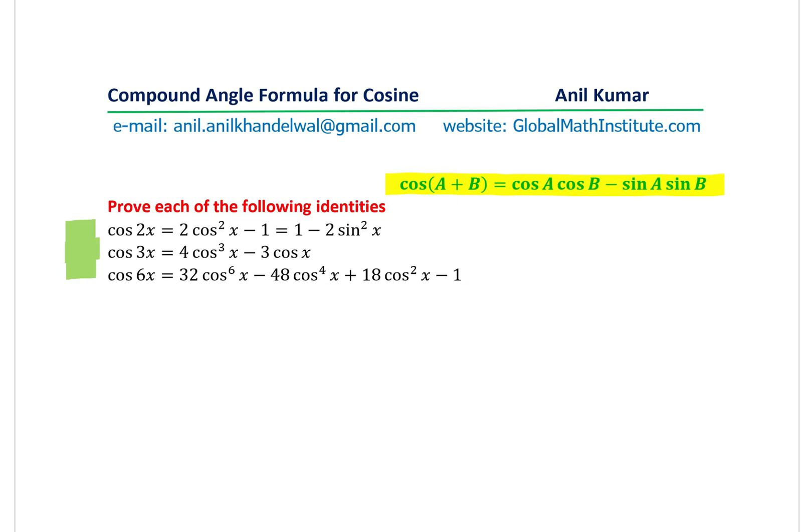I would like you to pause the video, answer this question and then check with my solution. So, the formula, compound angle formula for cosine A plus B is given to us. We will work on that directly. Cos A cos B minus sin A sin B. That is how you write cos(A + B).